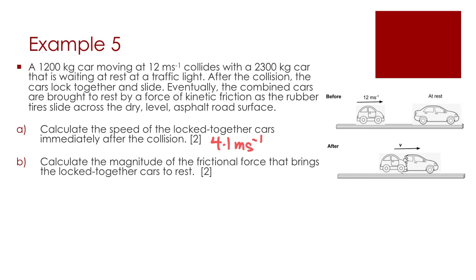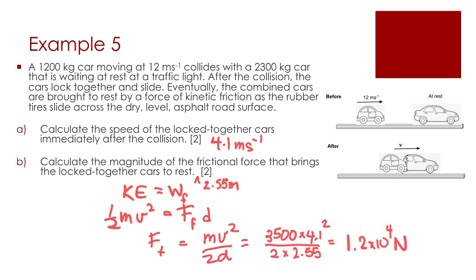Now, onto part B. Calculate the magnitude of the frictional force that brings the locked cars together to rest. And I should have here at a distance of 2.55 meters. So there's a few ways we can do this. So they have kinetic energy and that's going to go into the work done to overcome friction. So 1 half mv squared is going to be the force of friction times the distance that they travel. If I move this around, force of friction is going to be mv squared over 2d. And I have the answer of 1.2 times 10 to the 4 newtons when I use my calculator.